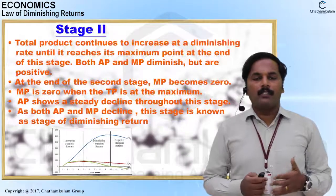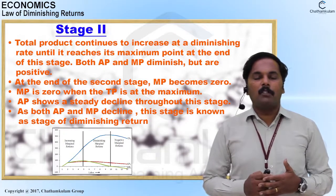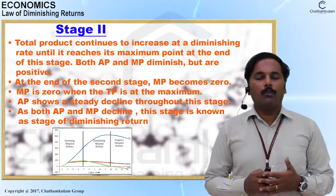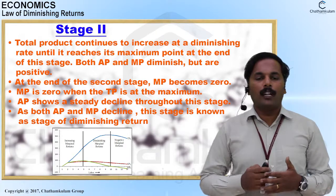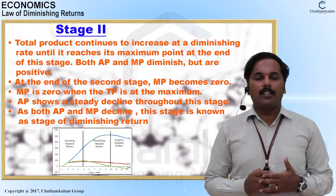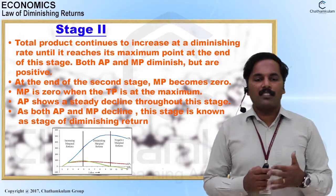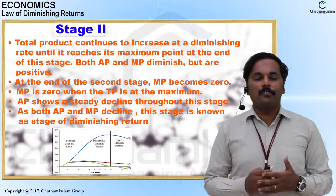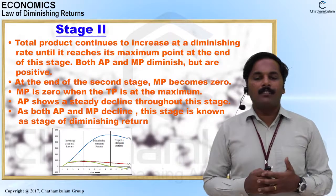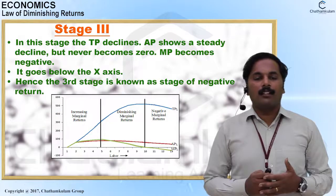In Stage 2, diminishing marginal returns: total product continues to increase but at a diminishing rate until it reaches its maximum point. Both AP and MP diminish but remain positive. At the end of the second stage, MP becomes zero — MP is zero when TP is at its maximum. AP shows a steady decline throughout this stage. As both AP and MP decline, this stage is known as the stage of diminishing returns.